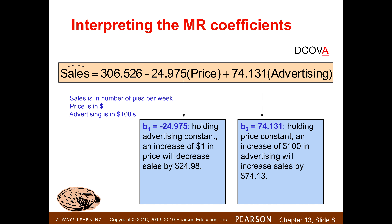Interpreting the multiple regression coefficients: B1 for price is negative 24.98. We would say 'holding advertising constant' — that is, holding all other variables in the model constant, taking their effect on sales out of the picture. If we have a variable included in our model, such as price and advertising here, we can control and adjust the variation in those predictors and their effect on predicting the number of pies per week.